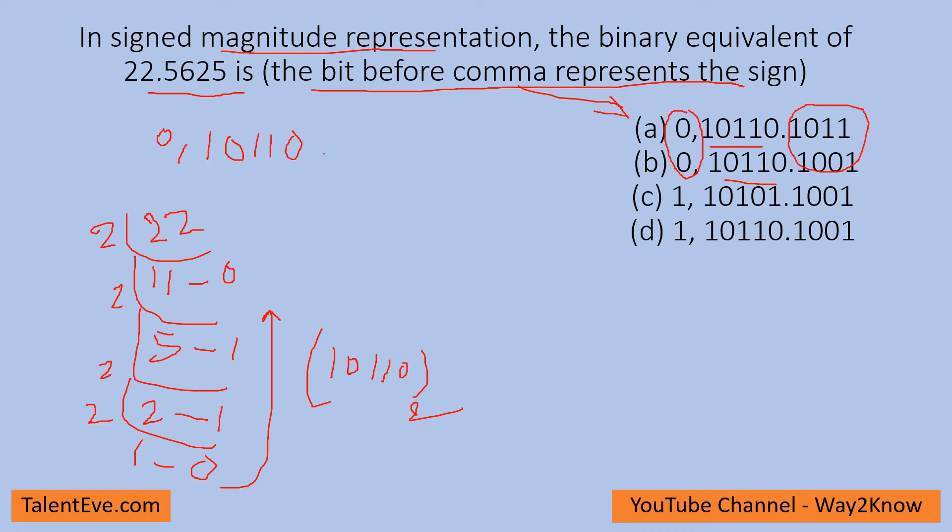Now the key lies in determining the number after the decimal part. After the decimal, the number is 0.5625. If you want to convert it to a binary number, generally for converting a fractional number into binary, what we do is: